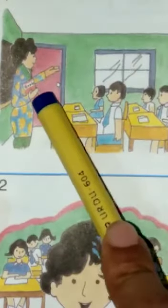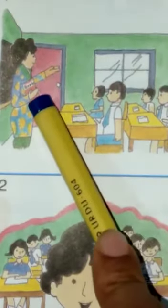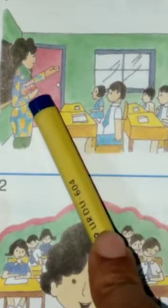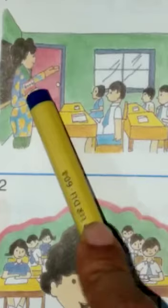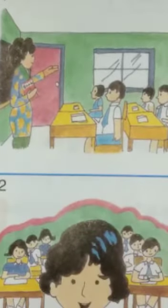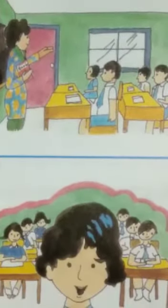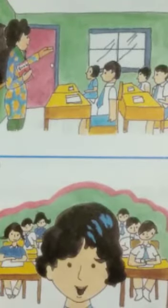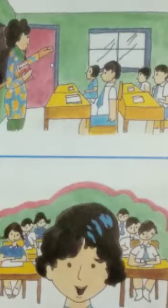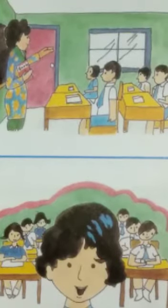Friends, look at the book. What is the teacher holding in her hand? The teacher is holding a book in her hand. Next, we can say: where are the students looking? Students are looking at the teacher, or we can say that students are listening to their teacher.